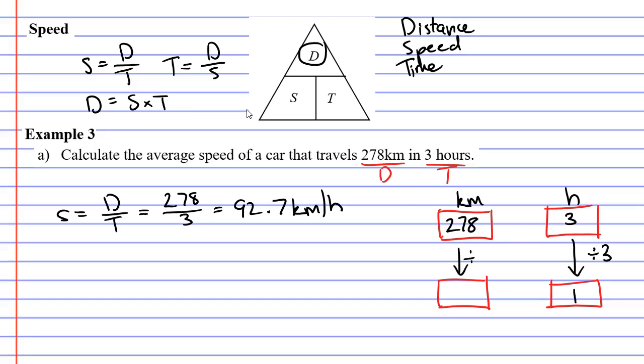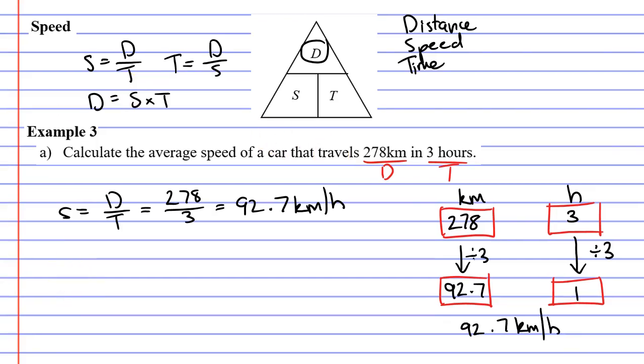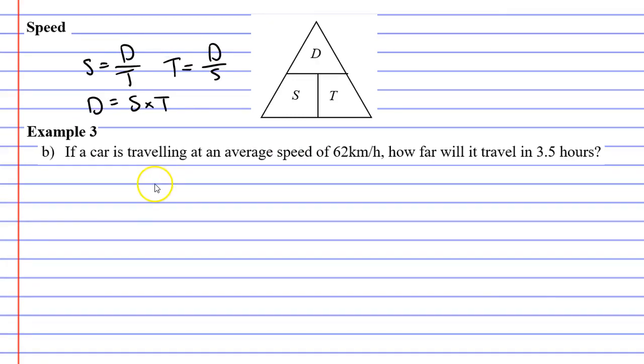3 on both sides. So 278 divided by 3 is the same number we had on the left, 92.7 kilometers. And if I travel 92.7 kilometers in one hour, then I am traveling at a speed of 92.7 kilometers per hour.